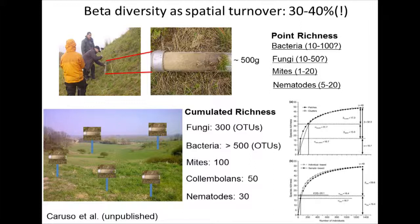It is understanding the processes supporting beta diversity that will eventually allow us to understand the processes determining soil biodiversity — actually terrestrial diversity in general.